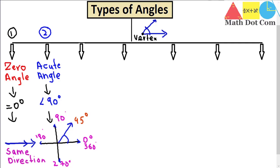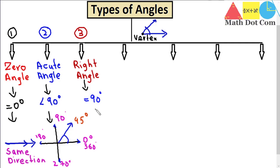The next type is the right angle. A right angle is exactly equal to 90 degrees — not less than, not greater than, exactly 90 degrees. So a 90-degree angle will look like this, with two arms and a 90-degree angle between them.